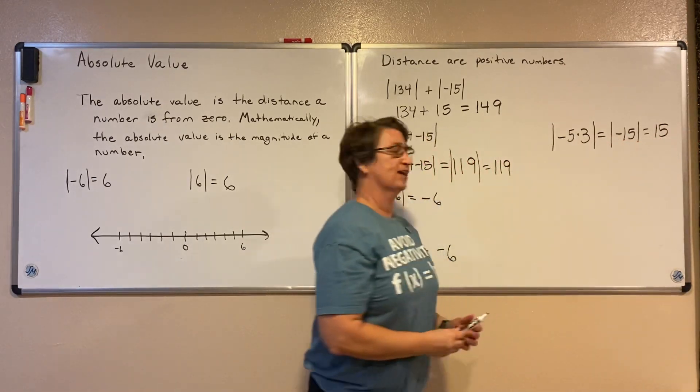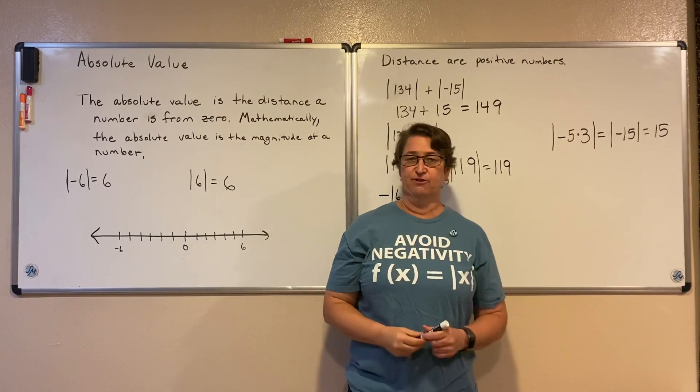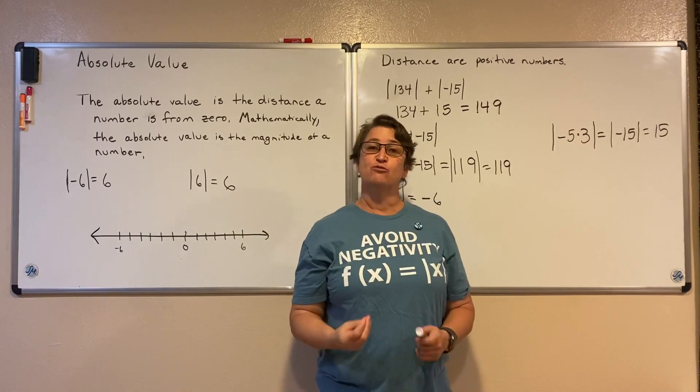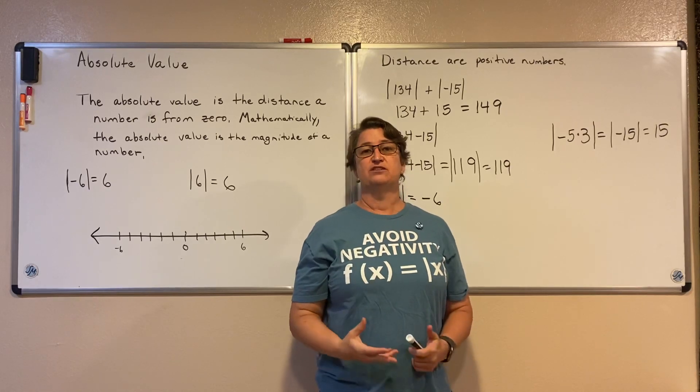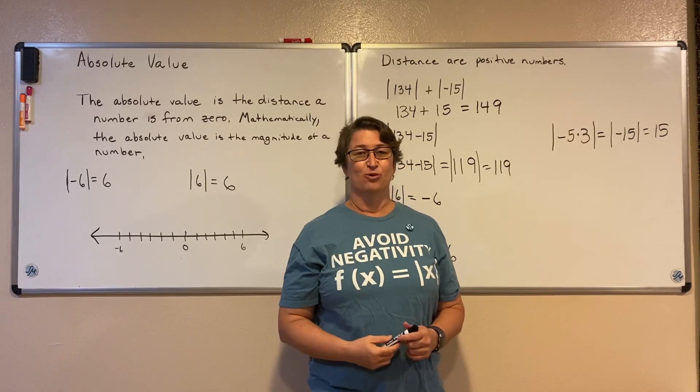So the absolute value of negative 5 times 3 is just equal to positive 15. So absolute value is just the distance from zero. Math made simple. It's Simpson Math. Thanks for watching.